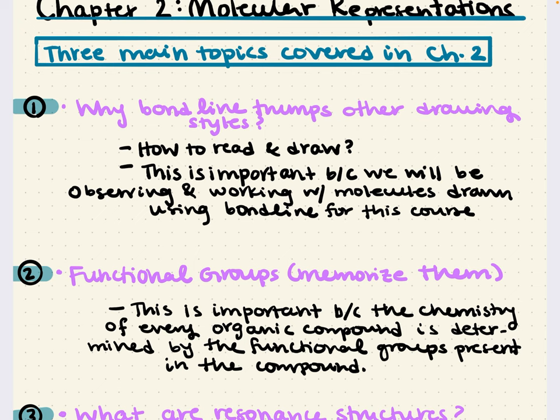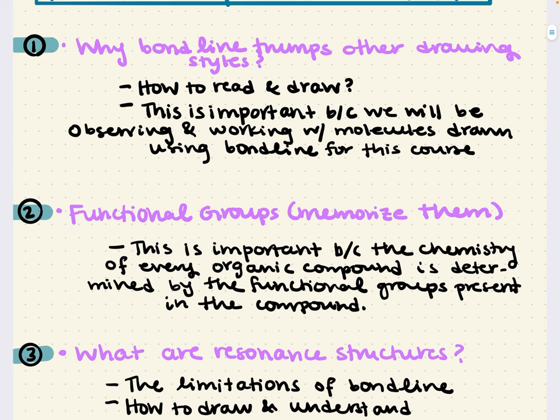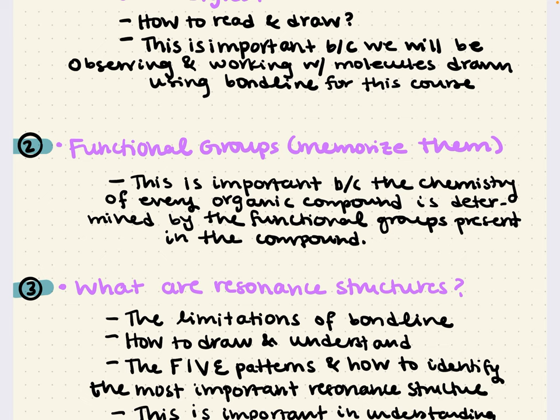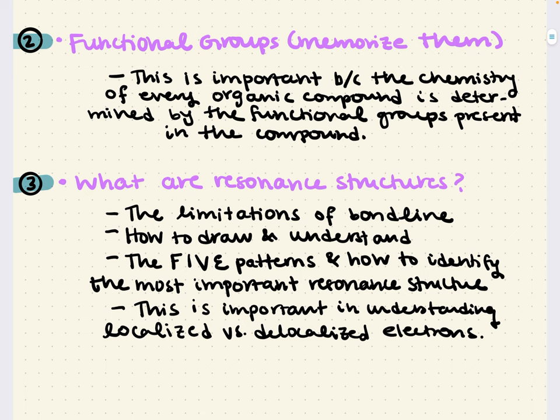We will also talk about constitutional isomers. After that, we'll define and learn about important functional groups — a characteristic group that has predictable chemical behavior. This is important because the chemistry of every organic compound is determined by the functional groups present in the compound. Lastly, we'll talk about resonance structures, where an approach called resonance is required to provide a more accurate representation of a molecule. We'll identify and draw resonance structures by learning five patterns and identifying the most important resonance structure.